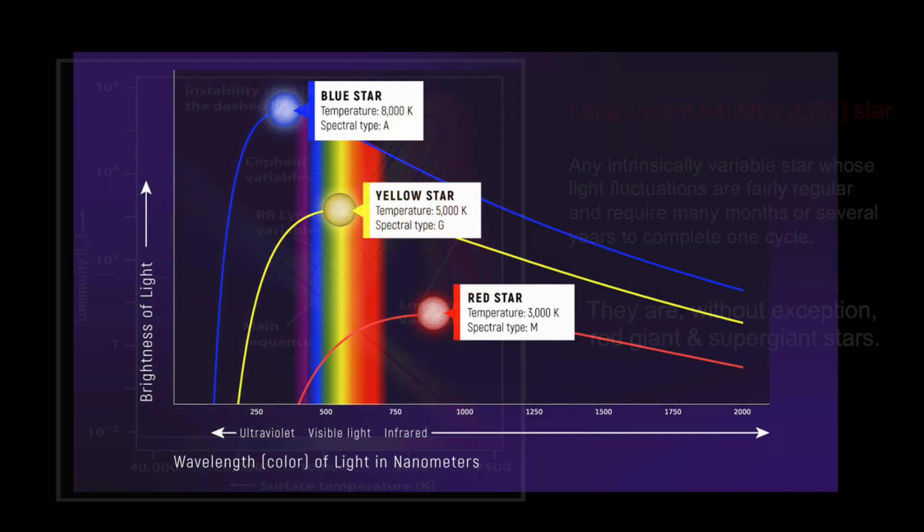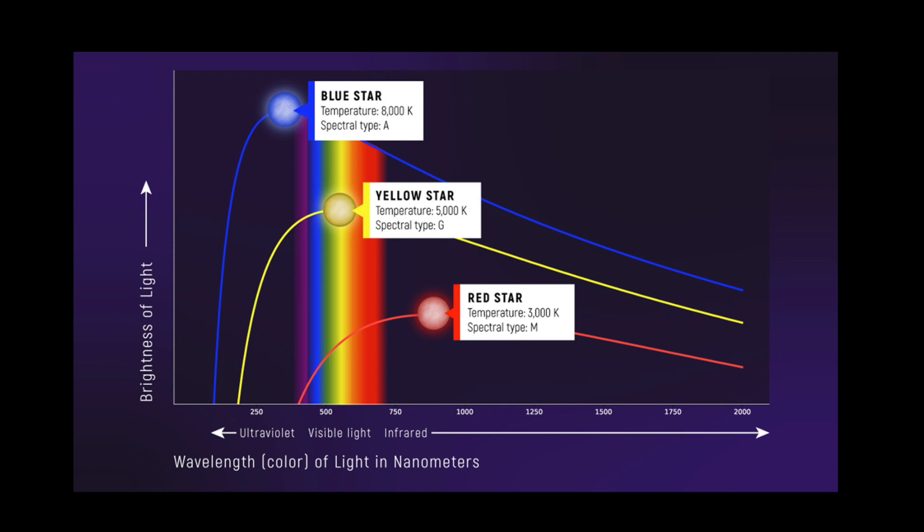So, red giants are very low in temperature, very low density, and their light emission profiles, as shown in this slide, demonstrates a high level of infrared relative to visible light. It all makes sense.